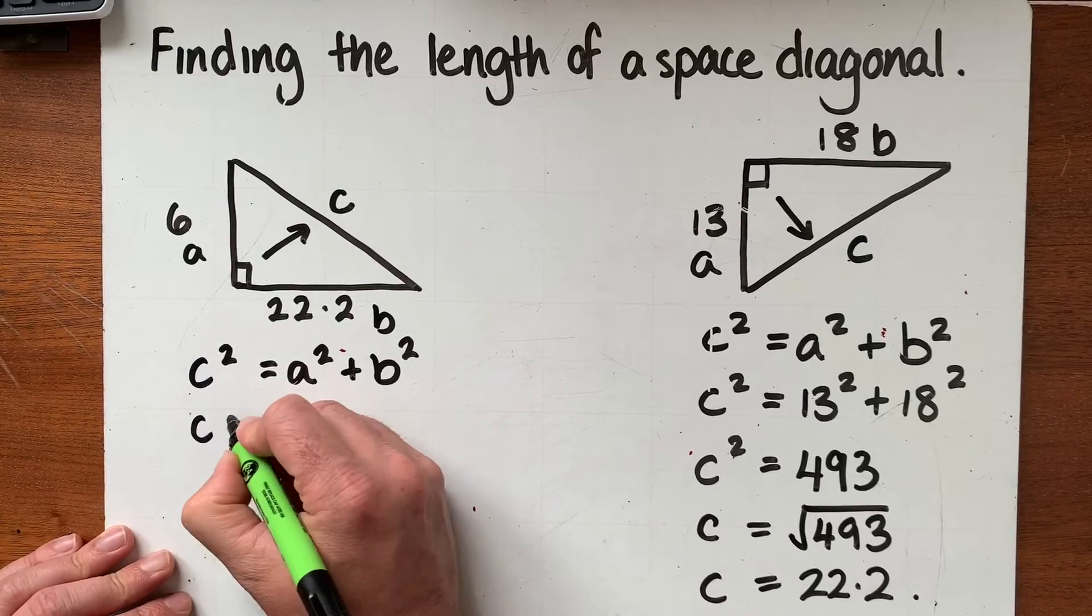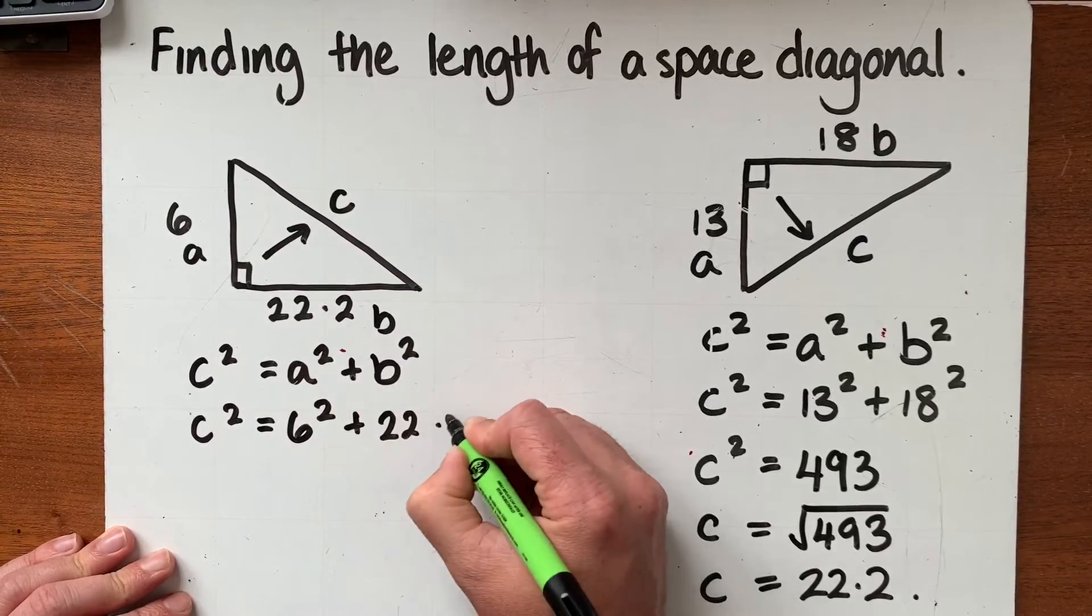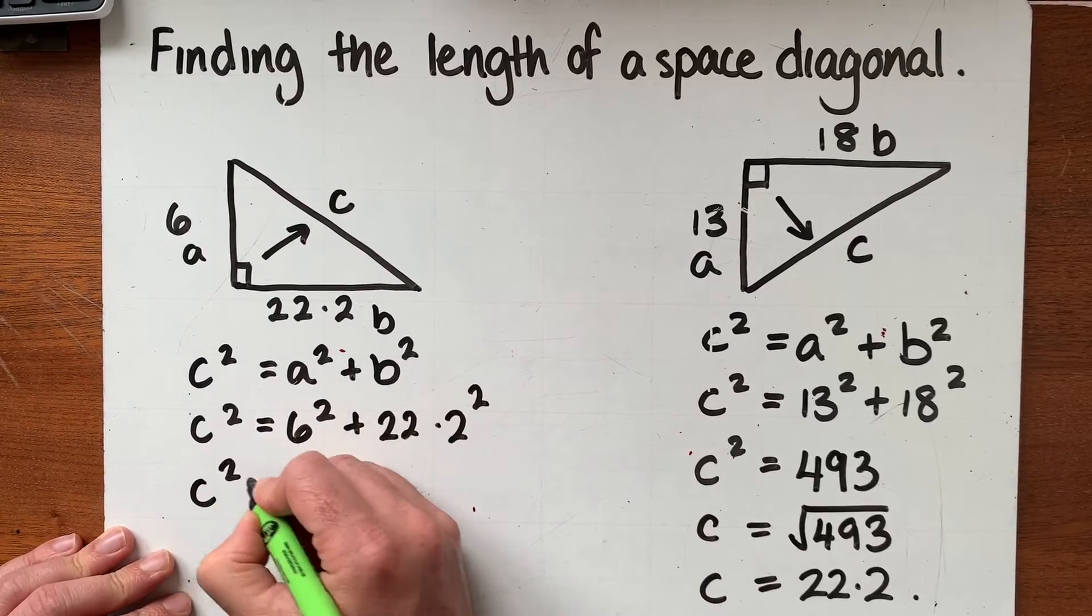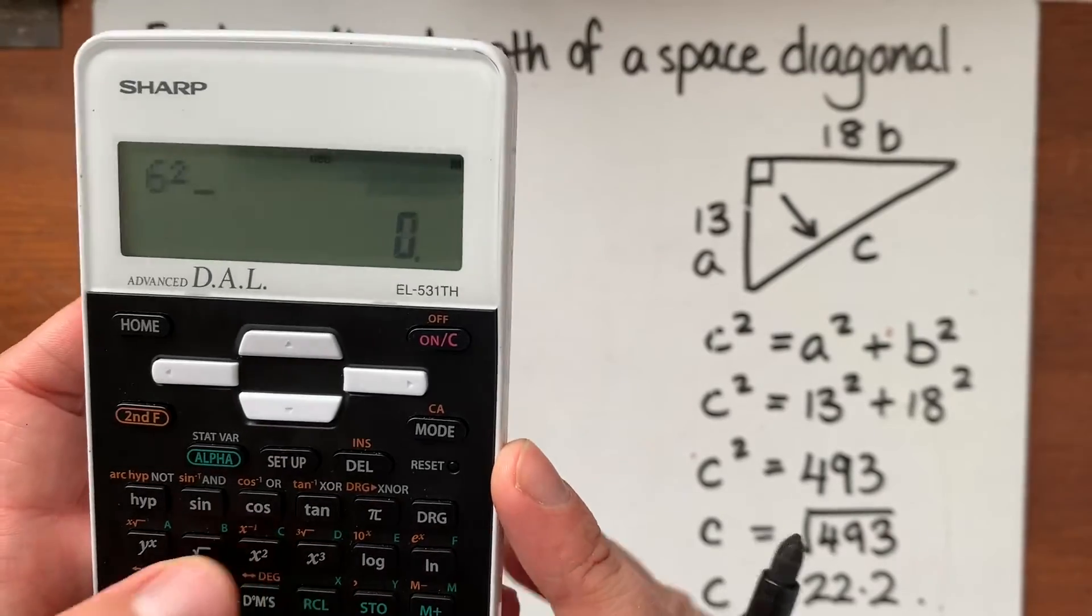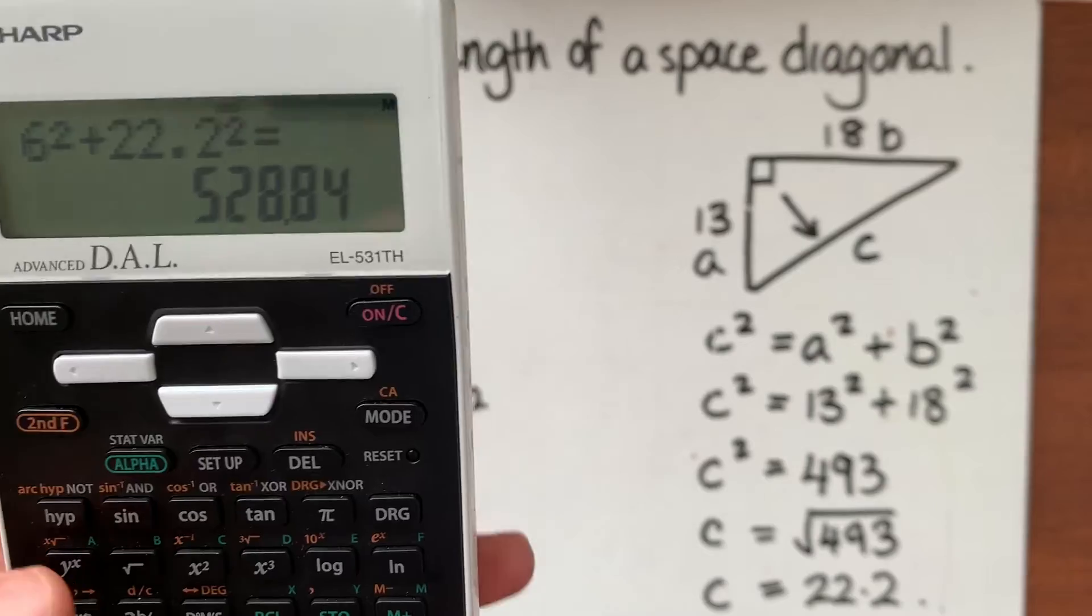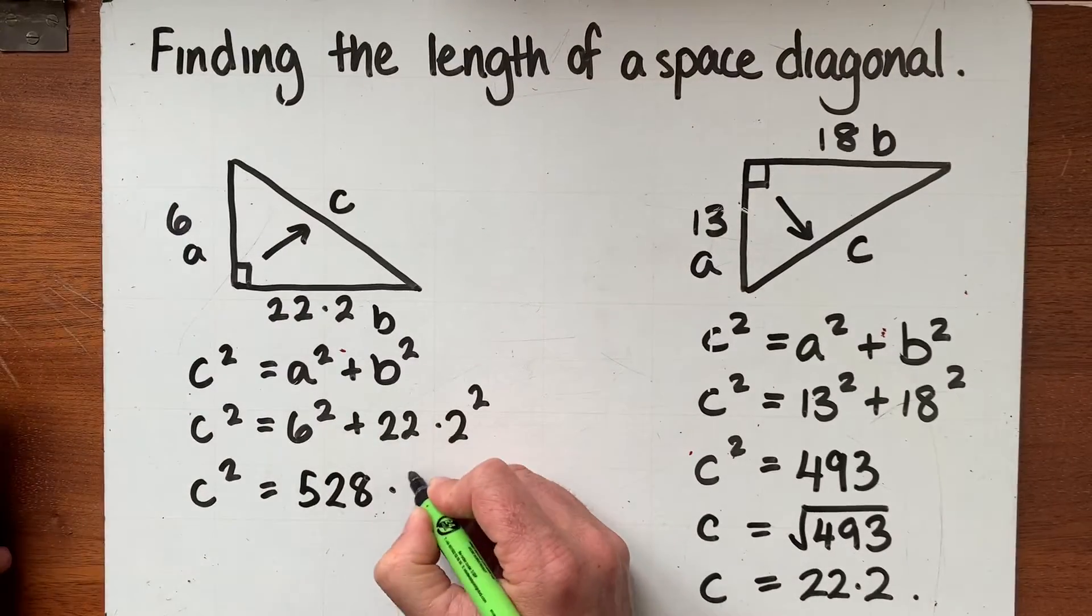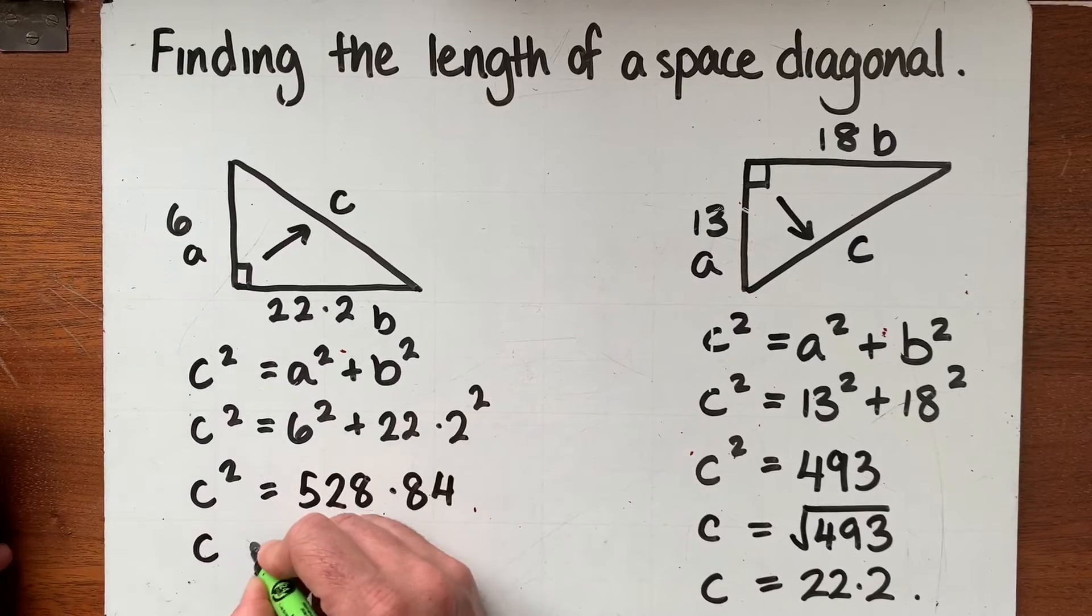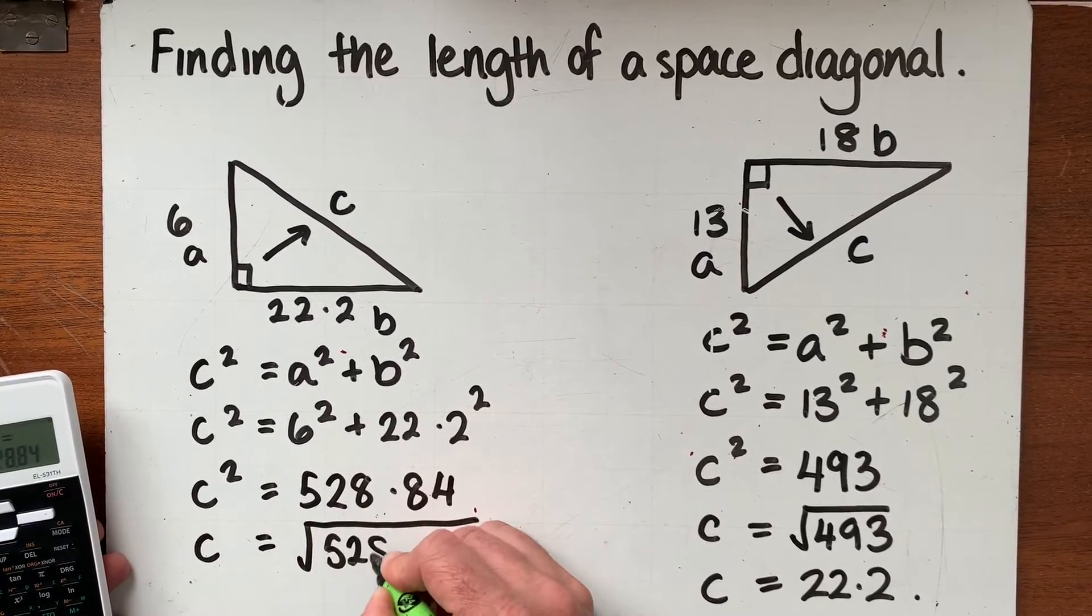All right we're going to do our same substitution. I am going to do that on the calculator all at once again so we've got 6 squared plus 22.2 squared and that gives me 528.84.